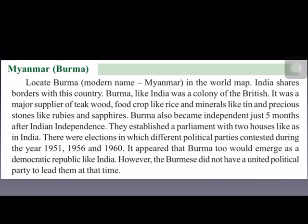Just like in India, a parliament with two houses was established in Burma, and elections were held. Different political parties contested the elections in 1951, 1956, and 1960. It appeared as if Burma too would become a democratic republic like India. However, since there was no united political party in Burma comparable to the Indian National Congress, it could not establish democracy effectively.